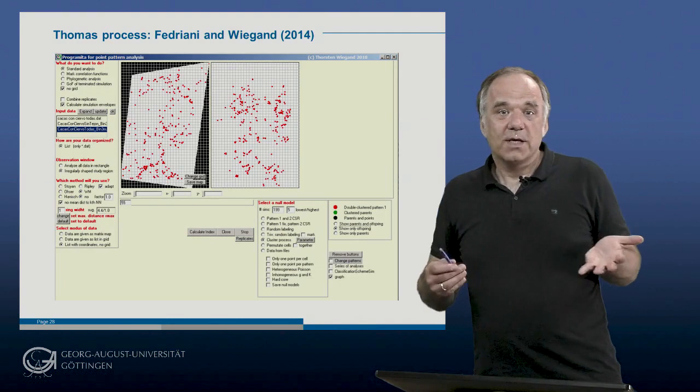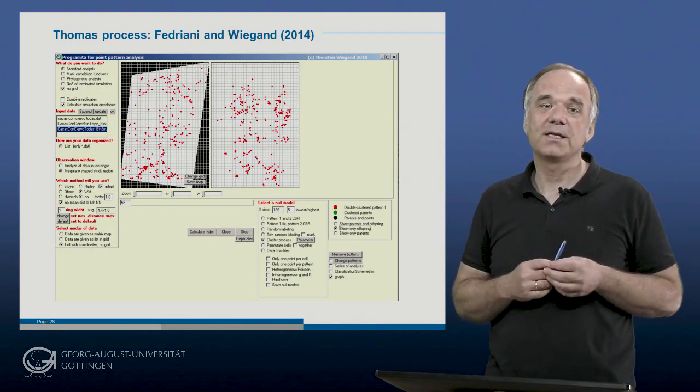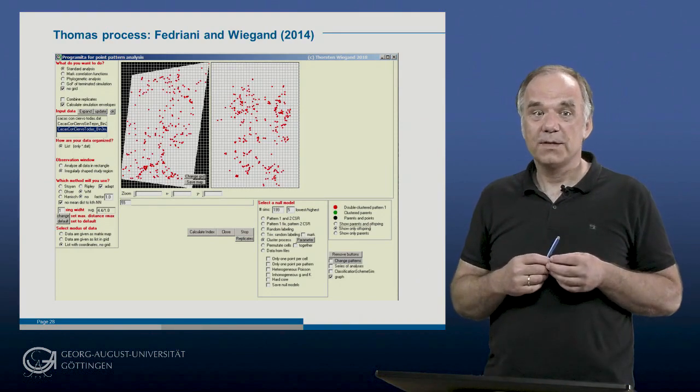So in the following I will show this approach for the example of the data of Rosé using my software Programmiter. Thank you for listening to the video on the Thomas process. In the next video I will continue with random labeling.